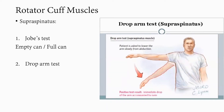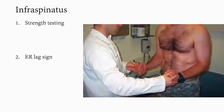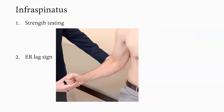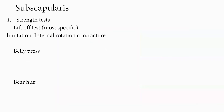Infraspinatus strength testing is done with external rotation of both shoulders simultaneously bilaterally to allow comparison. The lag sign — sometimes called the dropping sign — involves bringing the shoulder into maximum passive external rotation and asking the patient to hold the position. A positive test is the patient's failure to maintain maximum external rotation.